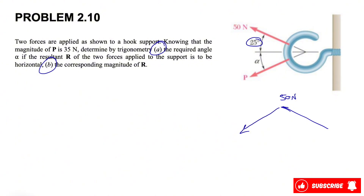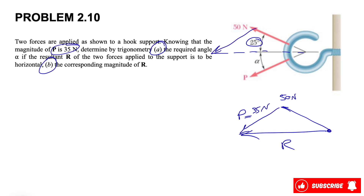The resultant R is the vector that connects the beginning of the 50-newton force to the end of P, which we know from the question is 35 newtons. This will be our P and this will be our R — another way of finding R is the parallelogram rule. If this angle over here is alpha, then here we also have alpha.